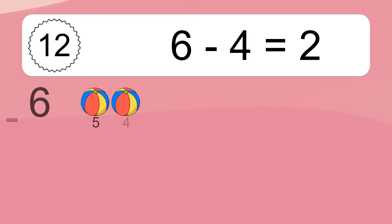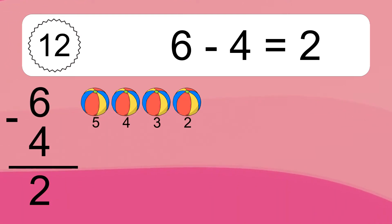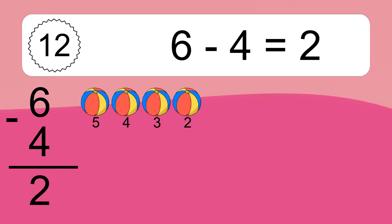6 minus 4 equals what? 6 minus 4 equals 2. Let's count it: 5, 4, 3, 2.